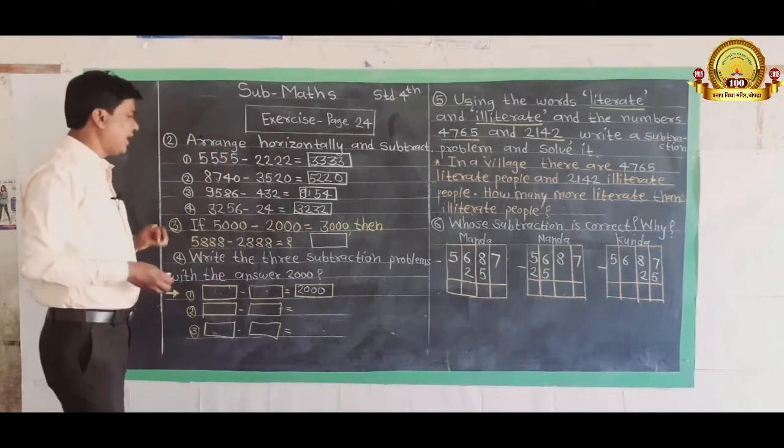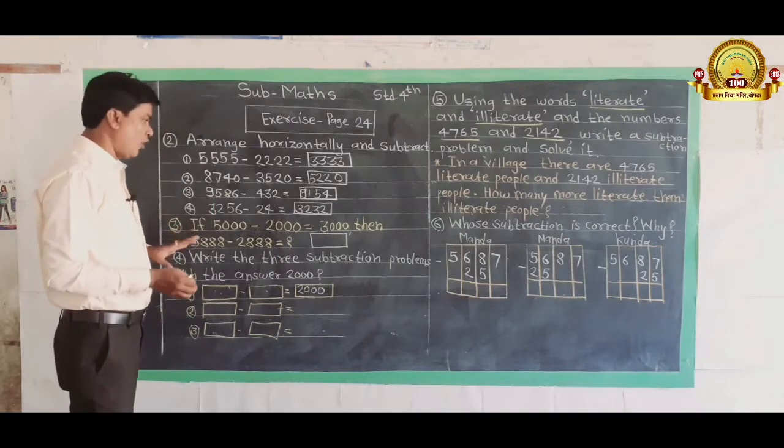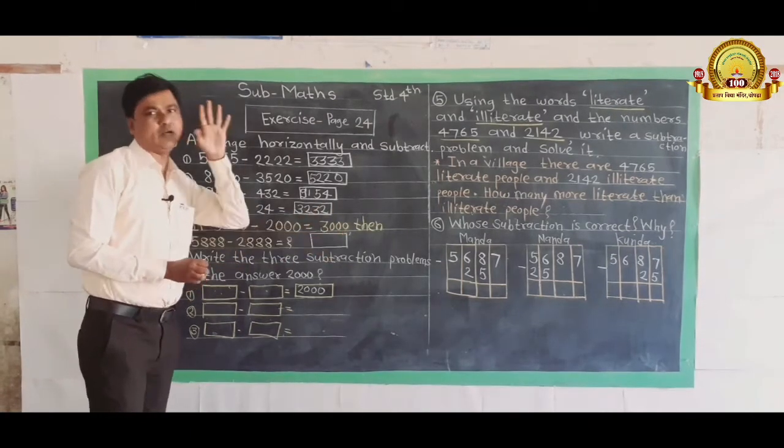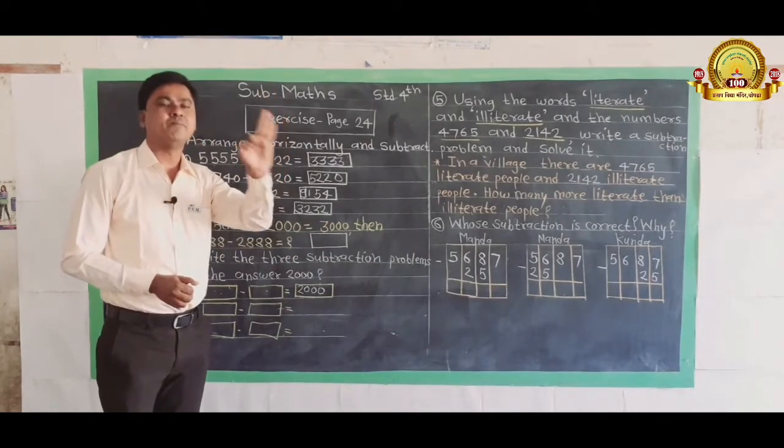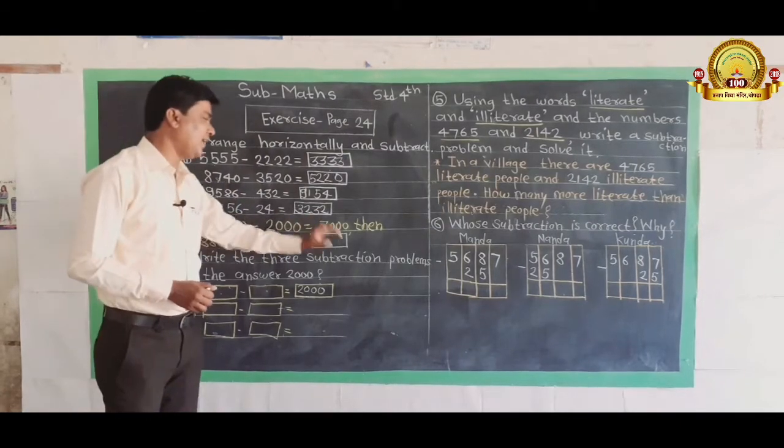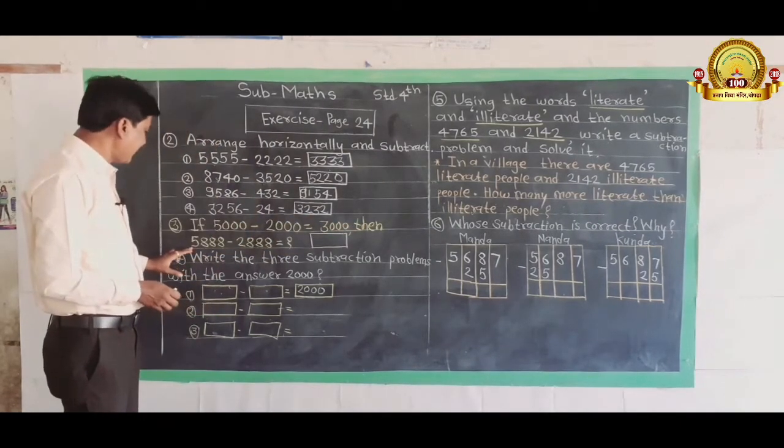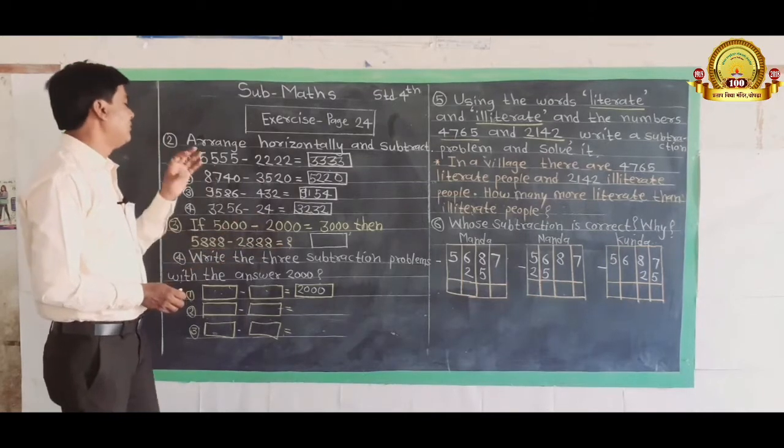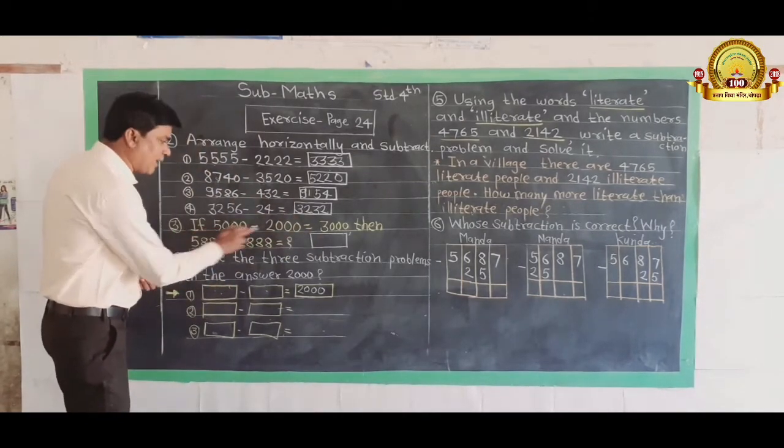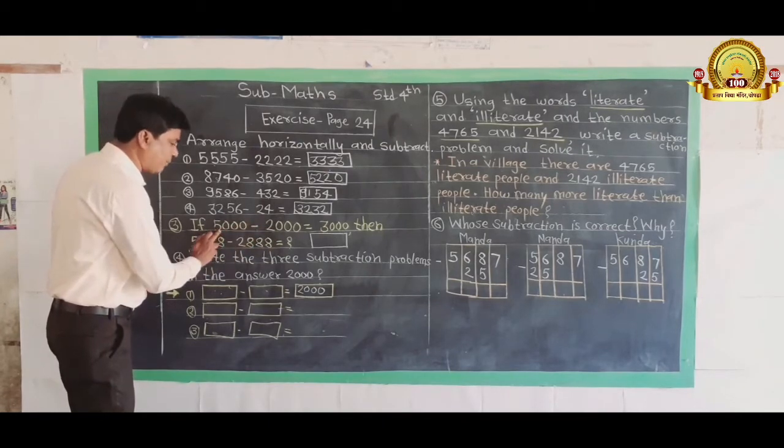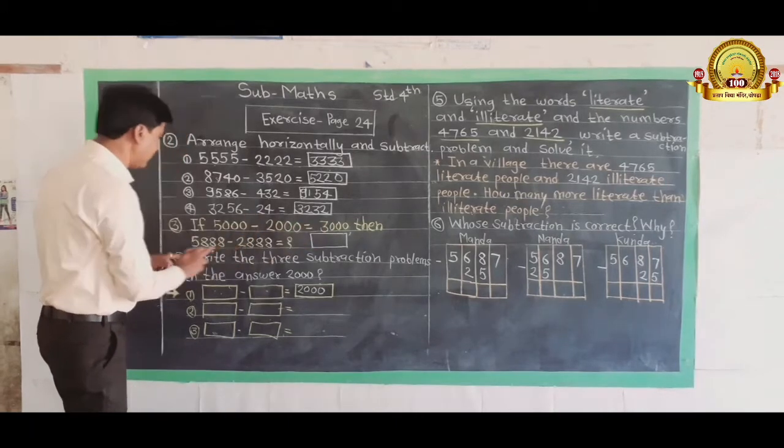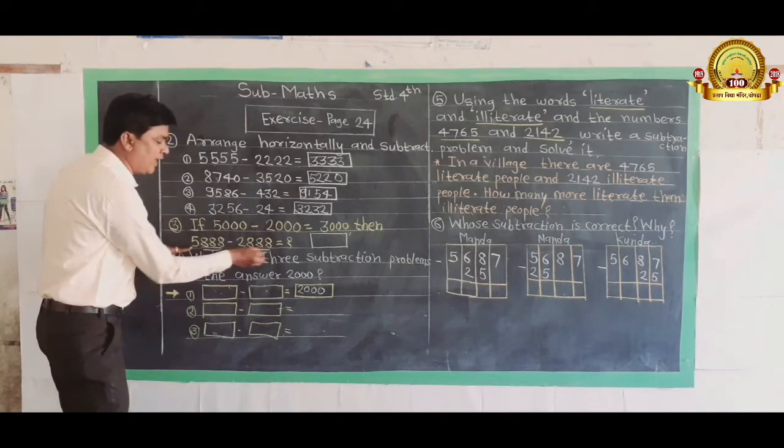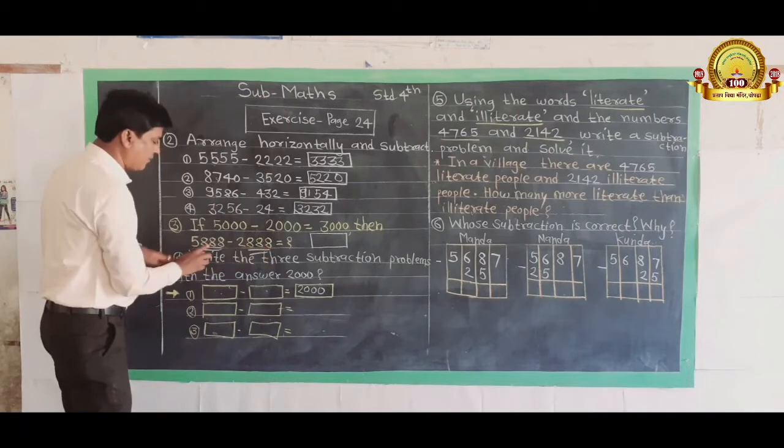So then question number 3, now I am going to read that. If 5,000 minus 2,000 is equal to 3,000, then 5,888 minus 888 is equal to what? This is the equation, and I will tell you that would consider 2,000 in this equation with 5,888 minus 888.